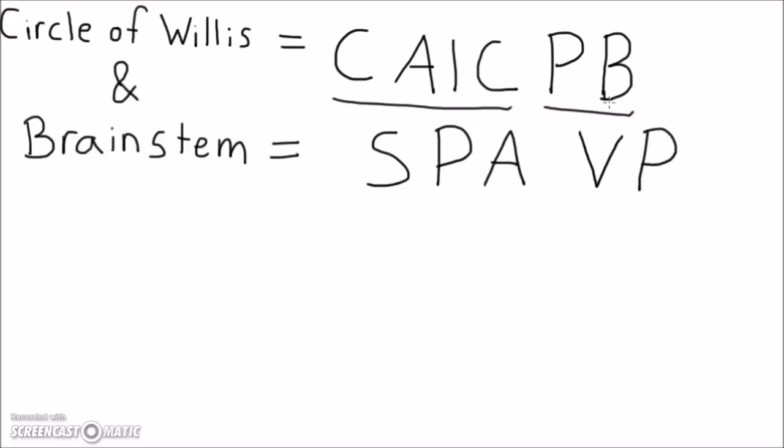The Circle of Willis is made up of the first six arteries and their symmetrical components. It's organized like this.